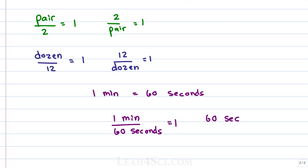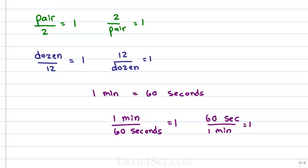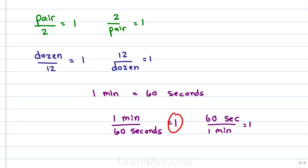So 60 seconds over 1 minute is also equal to 1. This right here — if you get this, you will understand the trick for dimensional analysis. As long as what's on the numerator is equal to or converts to what's on the denominator, your value will be the same, and that means it equals 1.